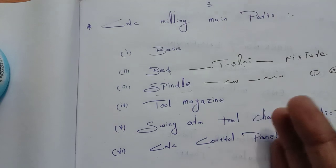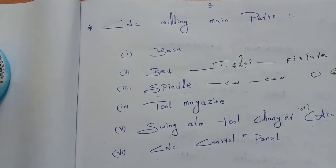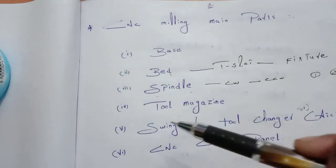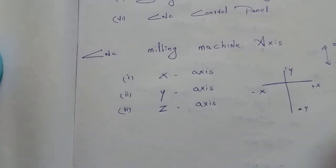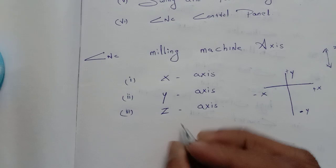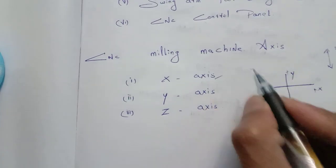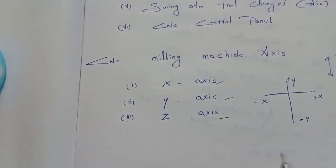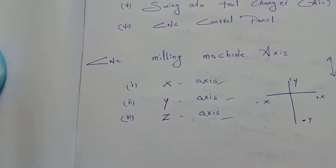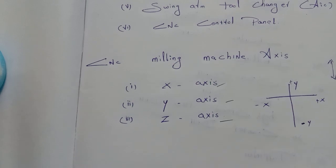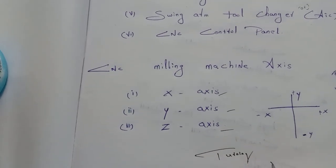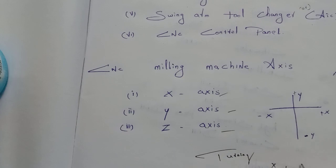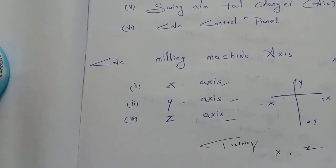I will tell you the details in the previous video. This is the CNC milling machine axis. This milling machine axis is 3-axis. This is the turning axis.